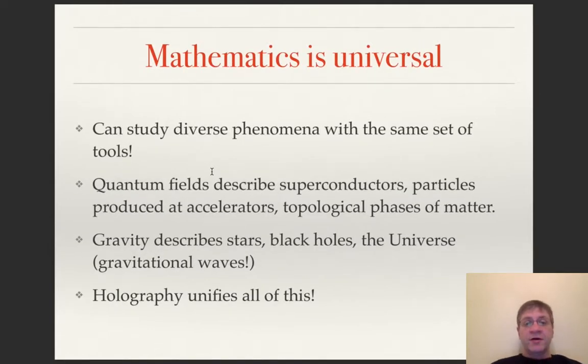Now, let me talk about something else. As I mentioned, mathematics is completely universal. So you can use the same equation to describe completely different things. For example, mathematics of quantum fields describes superconductors and also particles produced at accelerators, topological phases of matter. All of these things can be described with the same formulas. On the other hand, gravity describes stars, black holes, and the universe.